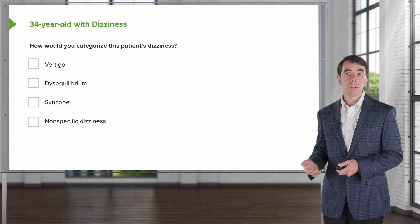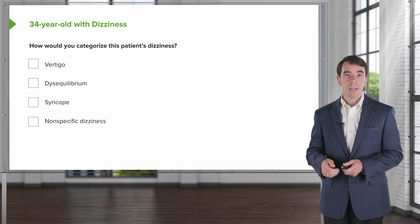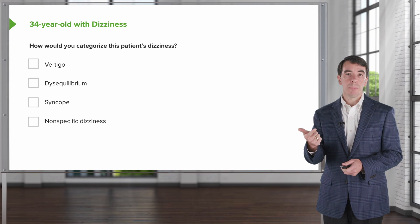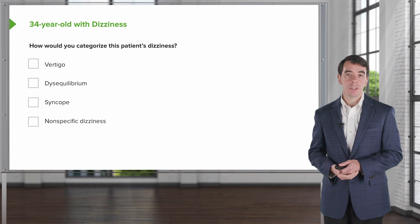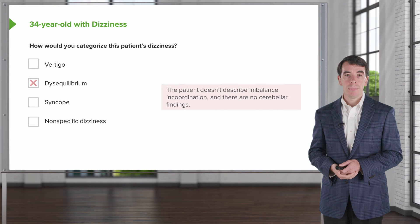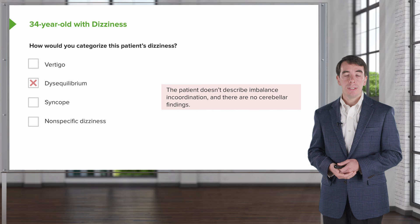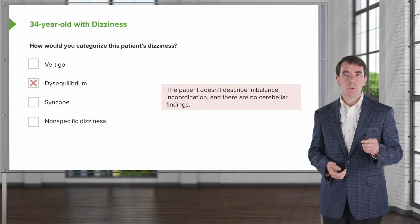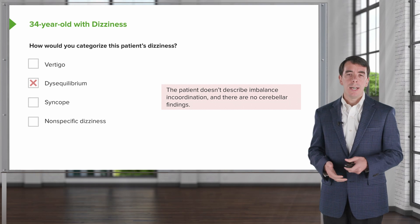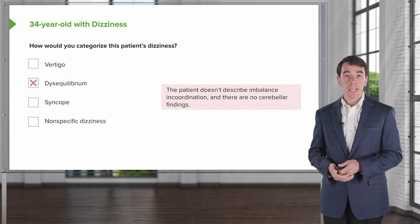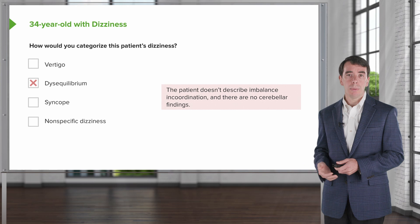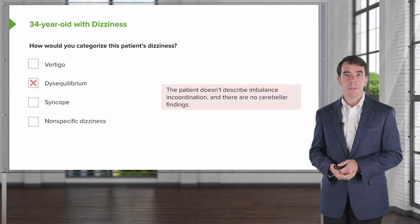So how would you categorize this patient's dizziness? Is it vertigo, disequilibrium, syncope, or nonspecific dizziness? Well, the clinical description doesn't sound like disequilibrium. Disequilibrium is imbalance or incoordination — problems with ataxia or dysmetria on exam, cerebellar findings — and none of those are reported or described in this patient. So this is an inconsistent presentation for disequilibrium.